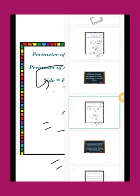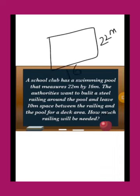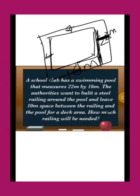Now the next one: a school club has a swimming pool that measures 22 meter by 16 meter. The authorities want to build a steel railing around the pool and leave 10 meter space between the railing and the pool on each side. We need to find how much railing is needed. The total length becomes 22 + 10 + 10.